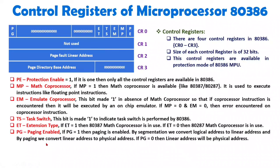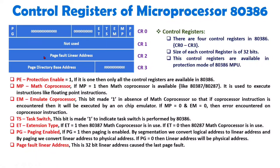Paging is not compulsory, but by enabling paging we can enhance the protection features of microprocessor 80386. Other bits are only in use if paging is enabled. Once paging is enabled, the page fault linear address is stored in CR2. So CR2 is used to store the page fault linear address — whenever a page fault is encountered during paging, that address will be loaded into the CR2 register.